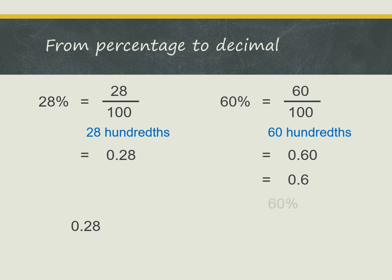In the same way, for the percentage 60%, we are actually dividing by 100. So I can shift the decimal point two places to the left, and I get the answer 0.6.